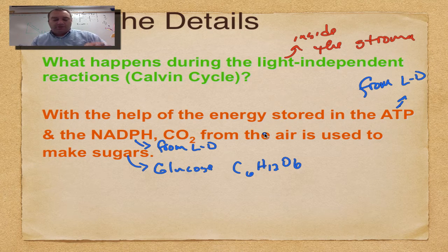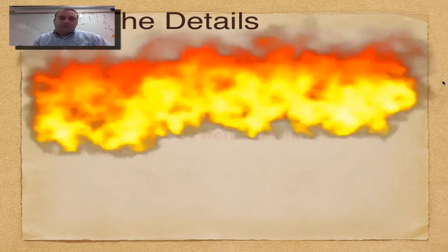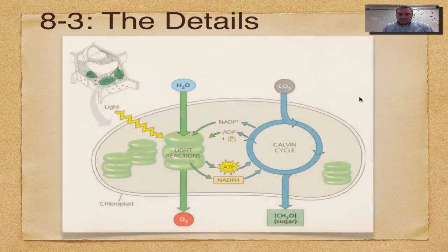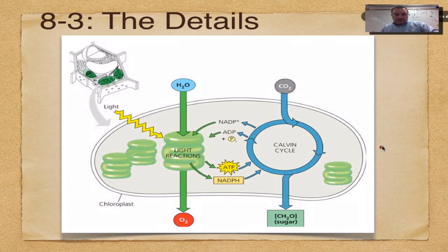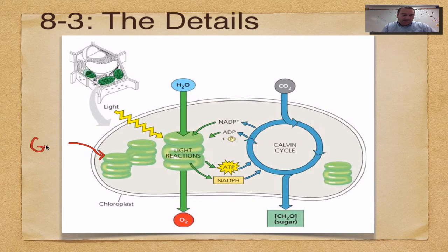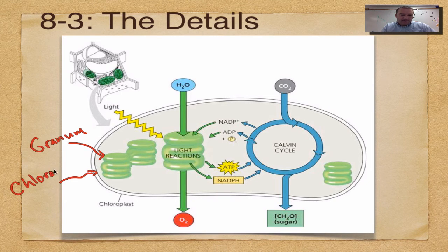In this picture here, this is a chloroplast. What do we have right here? Remember, this is a stack of thylakoids, so that would be a granum. These are green because this is where chlorophyll is found.